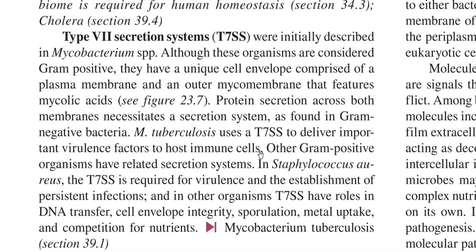For example, Staphylococcus aureus has a related Type 7 secretory system required for secretion of virulence factors and establishment of persistent infections in the host. Apart from protein secretion, Type 7 secretory systems also play a role in DNA transfer, cell envelope integrity maintenance, sporulation, metal uptake, and competition for nutrients.